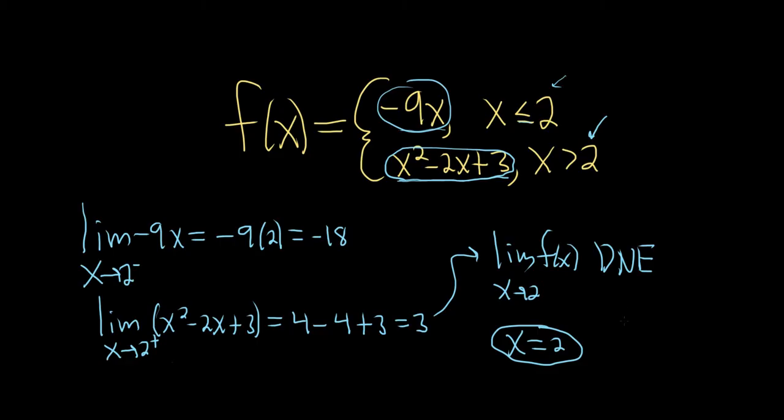And secondly, it also means that the discontinuity is non-removable. Recall that if the limit is DNE, it's non-removable. If the limit exists, it's removable. This is typically used for piecewise functions and absolute value functions.